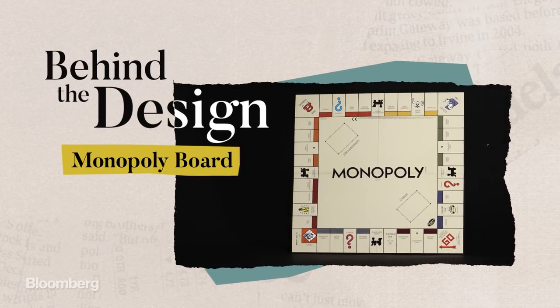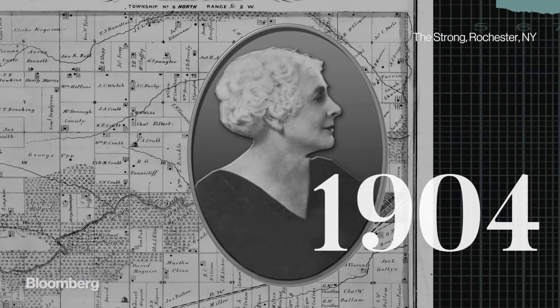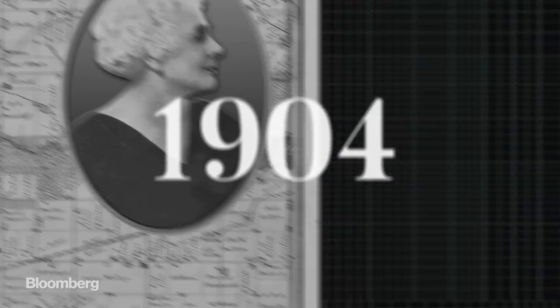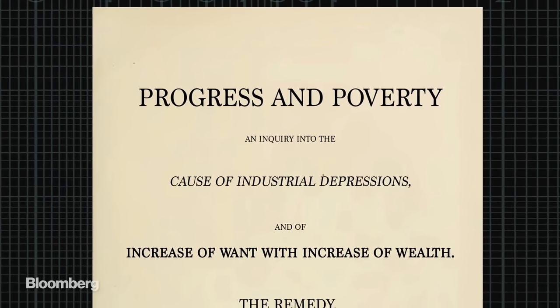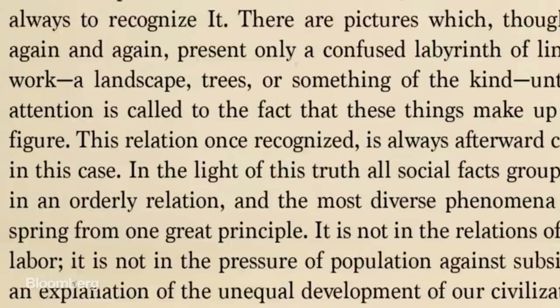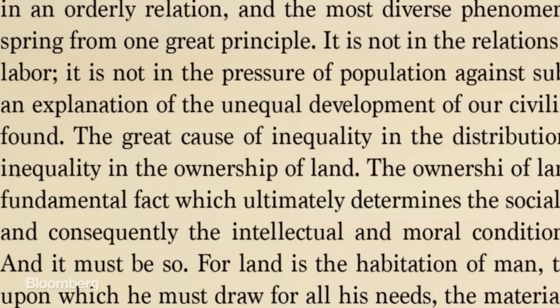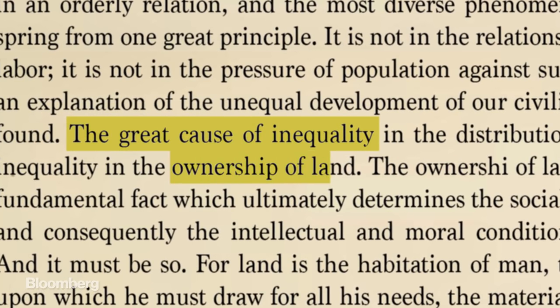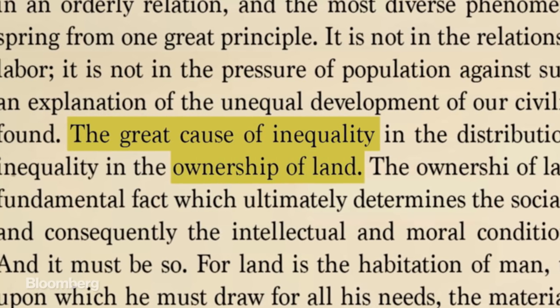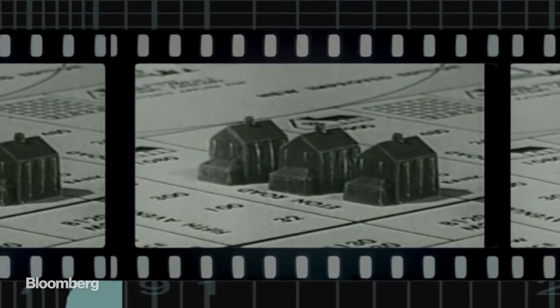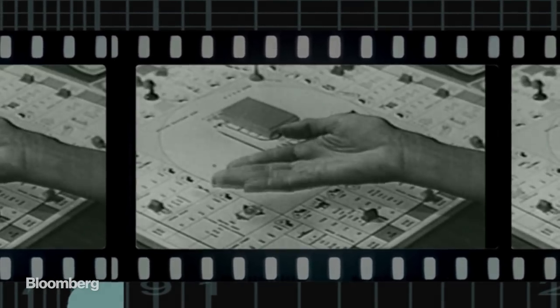The design of this board game started in 1904 with a woman named Elizabeth McGee. She was a fan of a book called Progress and Poverty by economist Henry George. In it, he argued that renting out land only profited a few individuals at the expense of the community. To teach people about George's theories, Lizzie McGee created a game with two sets of rules.